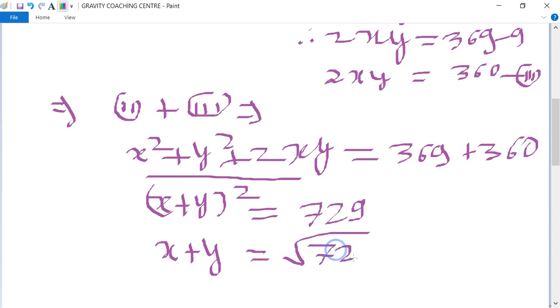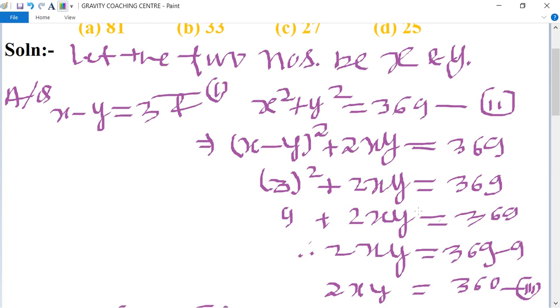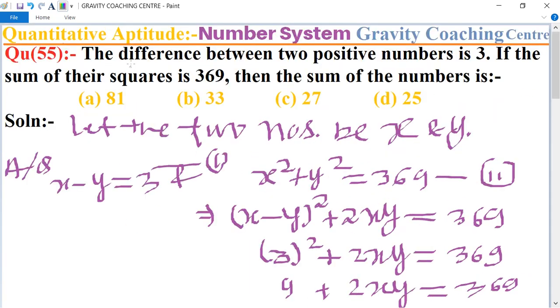So x plus y equals 27, which is the required answer. The sum of the numbers is 27, so option c is the correct answer.